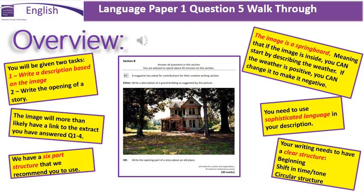We do have a 6-part structure that we recommend you use and I will go through that shortly. The image is a springboard, meaning that you don't have to describe the image in the way that it's presented to you. If the image is inside, you can still start by describing the weather outside. If the weather is positive in the image, you can still change it to be negative. You need to use sophisticated language in your description, meaning that you need to think about every single word and phrase to make sure that your writing is as powerful and engaging as it can be.